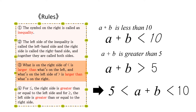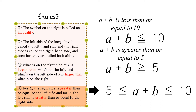What is on the right side of a less than sign is larger than what's on the left, and what's on the left side of a greater than sign is larger than what's on the right. For the less than or equal to sign, the right side is greater than or equal to the left side, and for the greater than or equal to sign, the left side is greater than or equal to the right side.